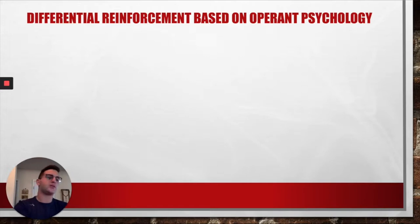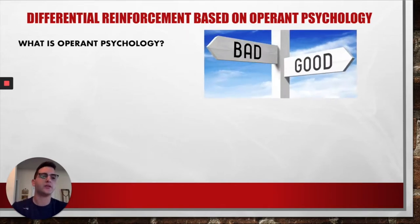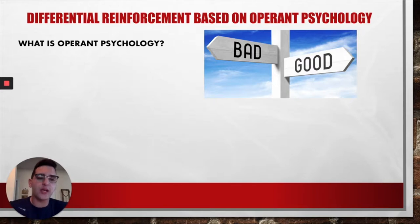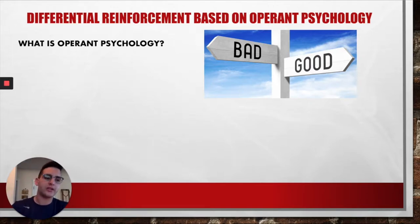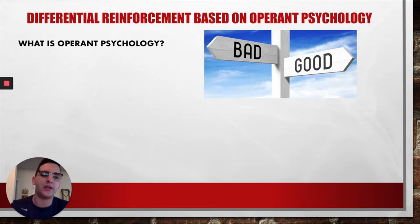Differential reinforcement is based on operant psychology. Operant psychology is a theory of learning which states that behavior is governed by its consequences. The consequences can be either positive or negative — a reward or a punishment. Behavior that has positive consequences will reinforce that behavior, meaning the actor will continue to repeat those behaviors in similar situations. If a behavior is punished, it is less likely to be repeated and will eventually be eliminated by the actor.